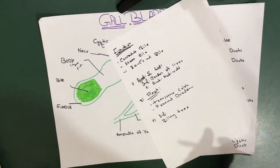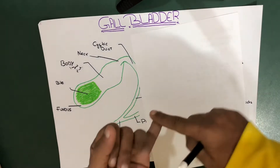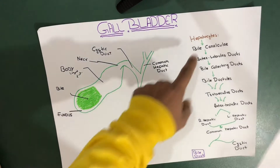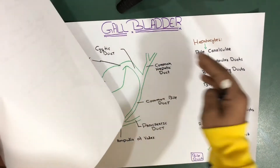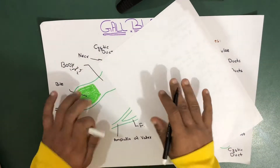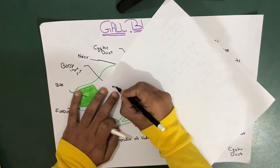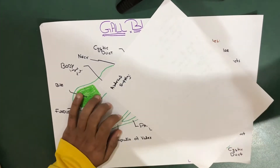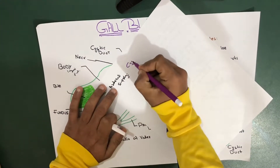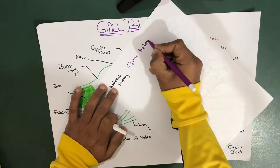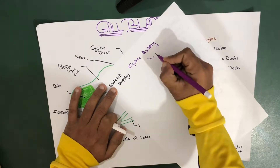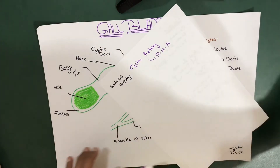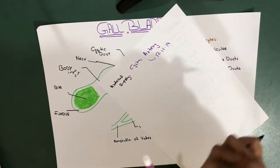Now we'll move on to the vasculature - that means the arterial supply, venous supply, and nerve supply. This lecture will be divided into two parts. Regarding arterial supply, the gallbladder is supplied by the cystic artery, which is a branch of the right hepatic artery, which is a branch of the common hepatic artery, and as you go further you reach the celiac trunk.